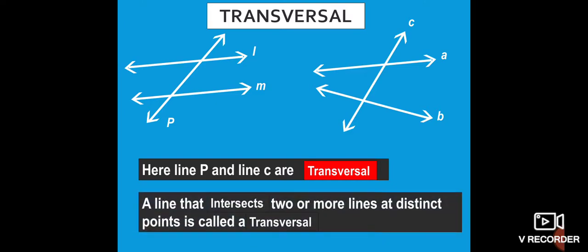A line that intersects two or more lines at distinct points is called a transversal. Line P meets line L and line M — these are two points of intersection. Similarly, line C meets at one point and another point, total two points. So, a line that intersects two or more lines at distinct points is called a transversal.